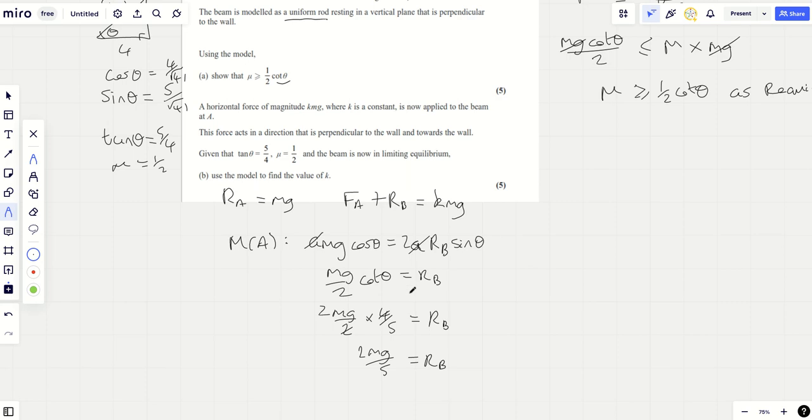Now really, as we've got to find the value of K, we want to just plug as much of this in as we can. Remember now it's in limiting equilibrium. So we can say that FA is mu RA. And so FA is going to be a half of RA, which is MG. So FA is MG over two. We can now start plugging these in. MG over two plus two MG over five equals K MG. The MGs cancel because they're throughout and that's a half plus 0.4. So K is 0.9 and we're done.